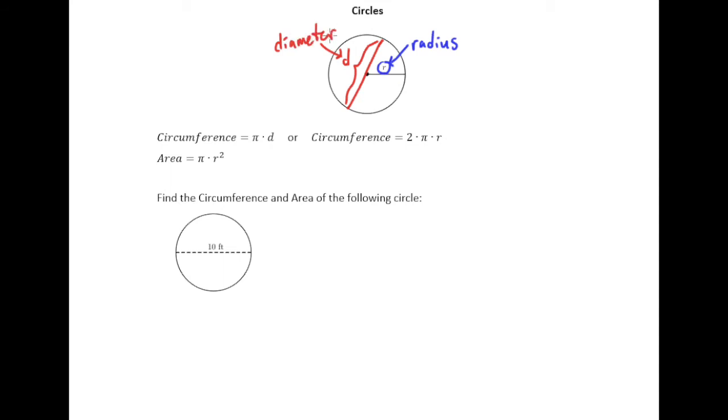So there's two measurements we're going to want to be able to do with circles. The first is circumference and the circumference you could also think of as the perimeter of the circle. It's just the distance around. So if you were to walk around the circle how far would you walk? And then of course the area is the amount of space it takes up.